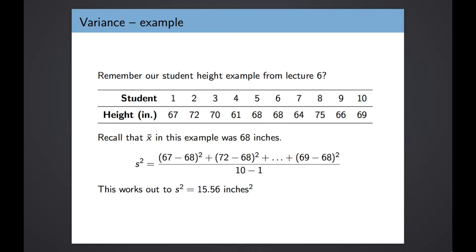In the previous lecture we had a hypothetical example where we polled 10 students and asked them their height in inches, giving us a small data set of 10 heights. We calculated the mean of this sample, x-bar, and found it was 68 inches. Now let's think about calculating the variance. For each observation we take the value and subtract the mean of 68. For student 1 that's 67 minus 68, squared. For student 2 it's 72 minus 68, squared, and we continue through all 10 observations. When we add up all those squared deviations and divide by 9 — the sample size minus 1 — we get that the variance for this sample is 15.56 inches squared.